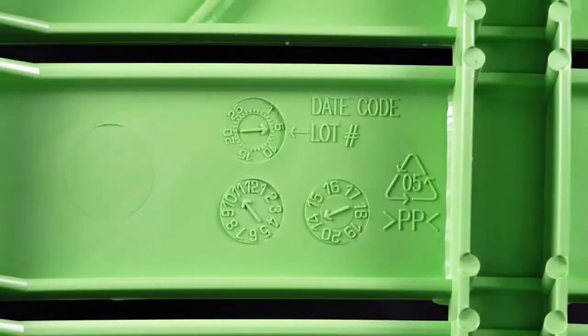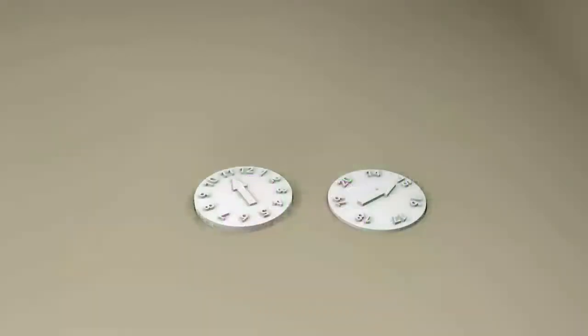But you may find something like this. It's a date wheel that shows the month and year the item was made. These are created by removable inserts and can be changed out for each run of the mold. They're very useful for tracking down defects.